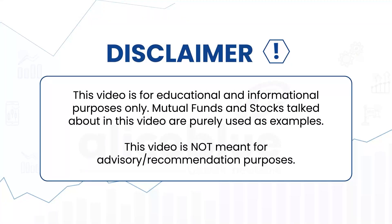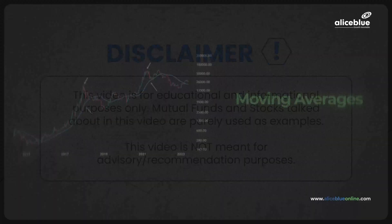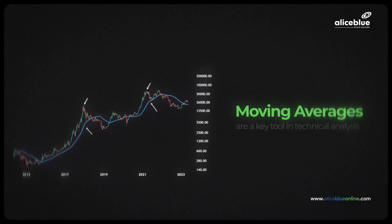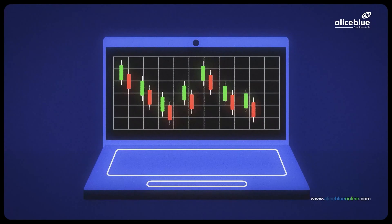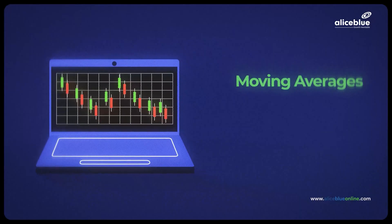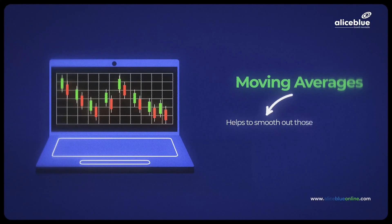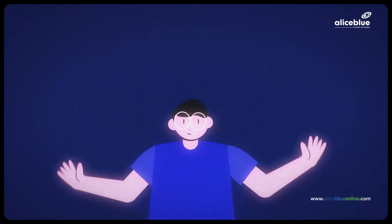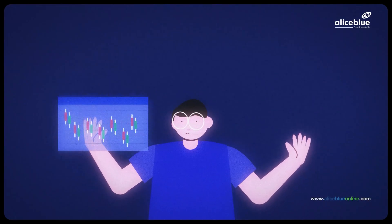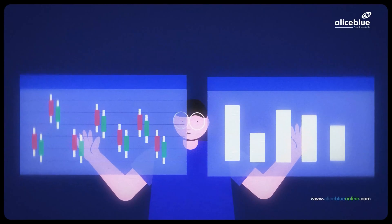Moving averages are a key tool in technical analysis. Imagine you are trading a stock whose price is going up and down a lot. A moving average helps to smooth out those ups and downs by calculating the average price over a set period. This makes it easier to see the overall trend rather than getting caught up in the short-term swings.